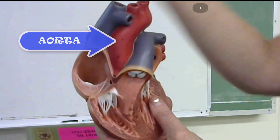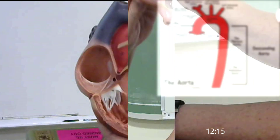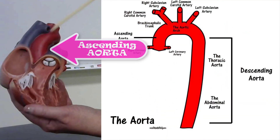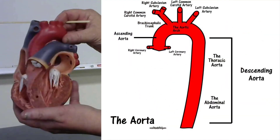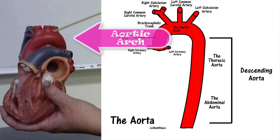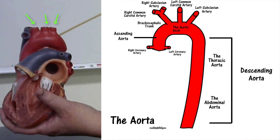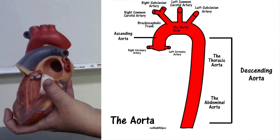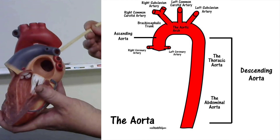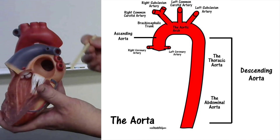Once blood travels through the aortic semilunar valve, it enters the aorta. The aorta has different regions: the first portion is the ascending aorta, followed by the aortic arch — which is where these three superior branches arise. After the aortic arch, it continues downward as the descending aorta.